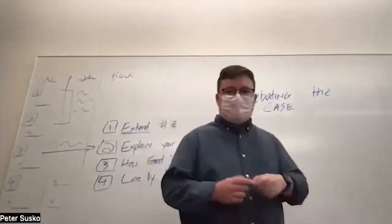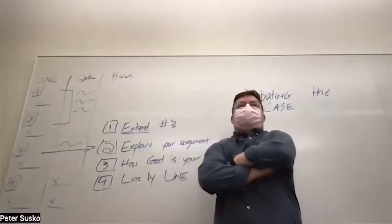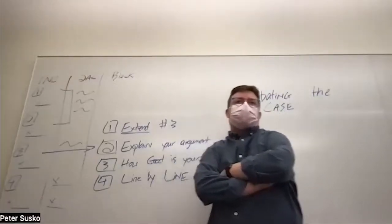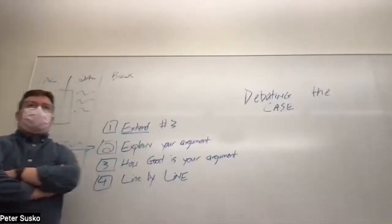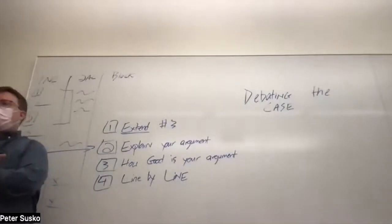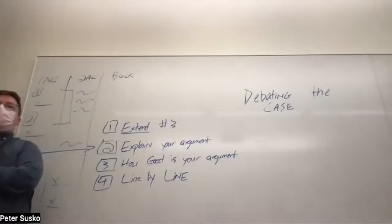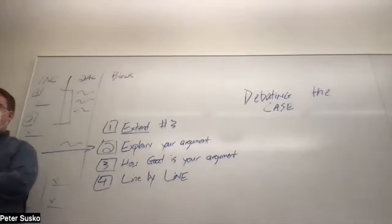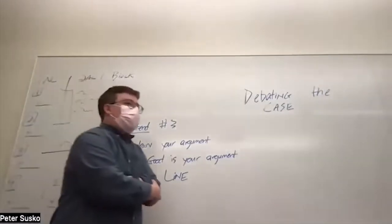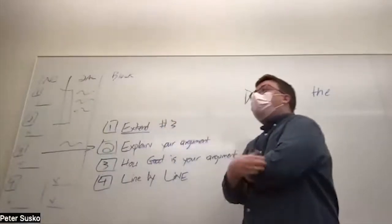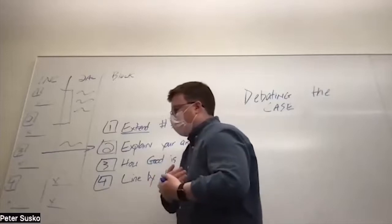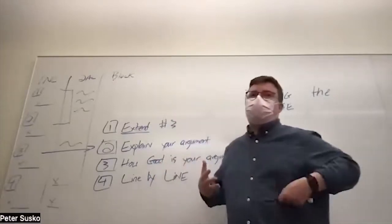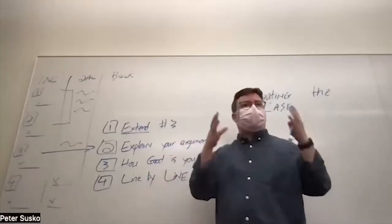Why do you do line by line after you explain why your argument is good? You have to provide context of what your argument is, because often when you're extending an argument it's built in to answer something that the 2AC said, and it becomes obvious to you and the judge on why your line by line makes sense. You always have to think about how much background knowledge your judge has. At camp your lab leader might know a lot about the Article 5 aff, the cyber aff, the AI aff. But when we get into the season, unless they went to a camp where they read the same material, they don't have that context. So you need to provide that context to give the judge understanding of where it is.